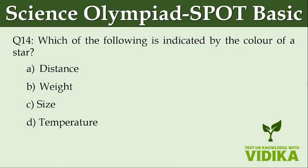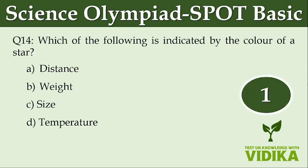Which of the following is indicated by the color of a star? Option A: distance. Option B: weight. Option C: size. Option D: temperature.